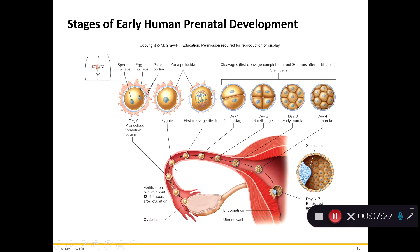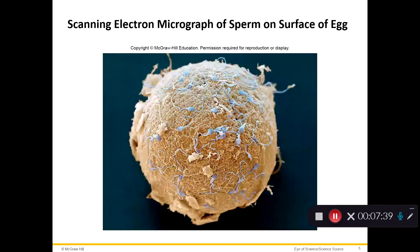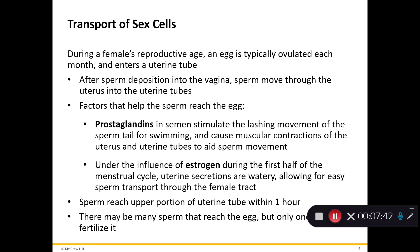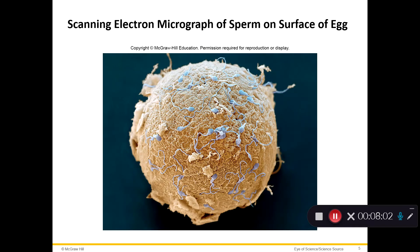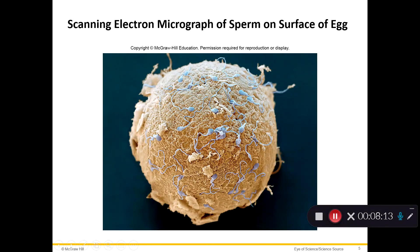Here we see a picture of the uterine tube coming off the uterus — maybe a couple inches long, but it takes a while for sperm to travel there. In this picture, the large round structure is the egg — the oocyte or ovum — and all the small gray structures on top of it are the sperm cells trying to fertilize the egg.